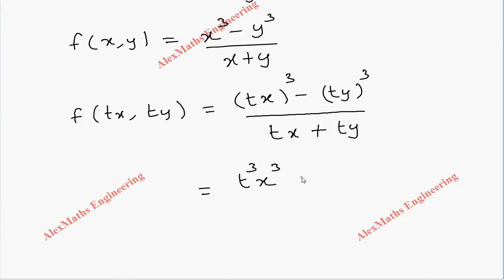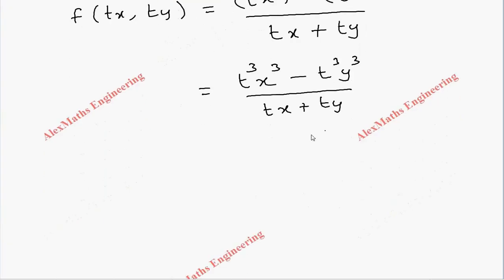We can take t³ common in the numerator, so it becomes x³ - y³. In the denominator we can take t common, it will become x + y.